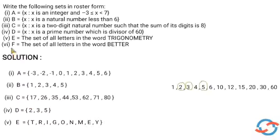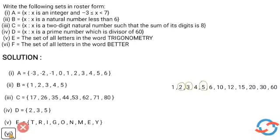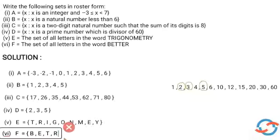Now the last question: F is equal to the set of all letters in the word BETTER. The letters are: B, E, T, T (repeated), E (repeated), R. Removing duplicates, we get F is equal to {B, E, T, R}.